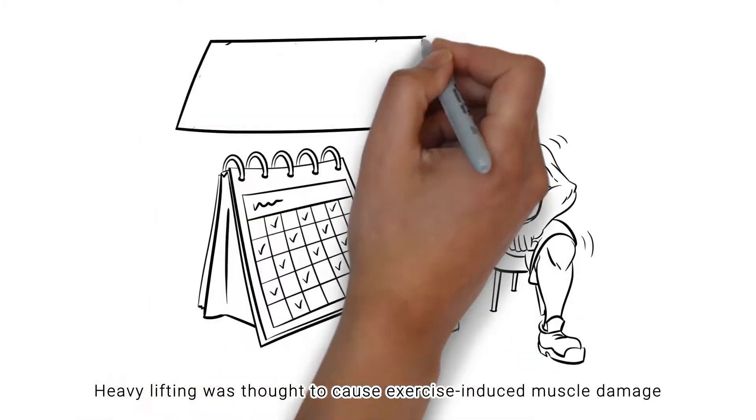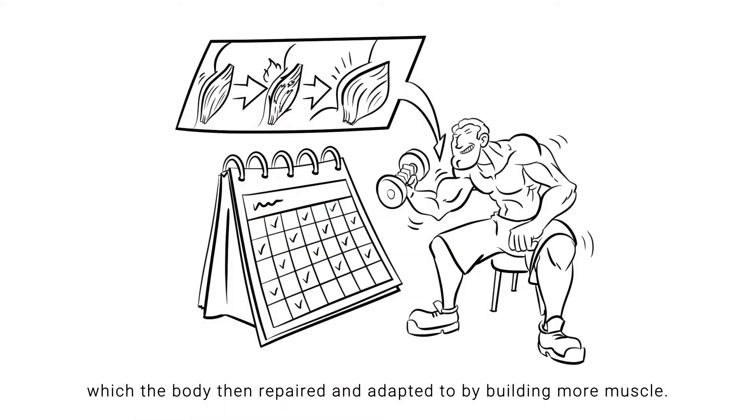Heavy lifting was thought to cause exercise-induced muscle damage, which the body then repaired and adapted to by building more muscle.